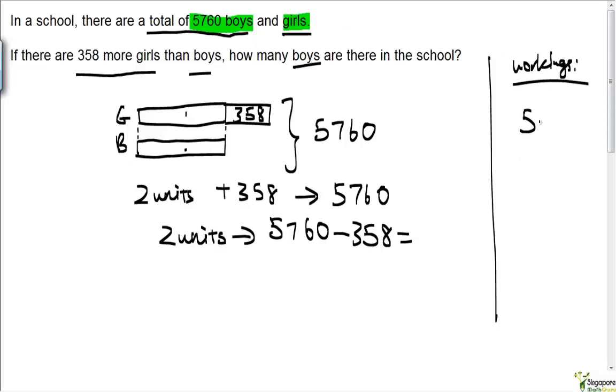5760 minus 358. It cannot be subtracted from zero, so we borrow from the 10th place. We bring one set of 10 here, so there's 10 ones here. 10 minus 8 is 2, 5 minus 5 is 0, 7 minus 3 is 4, 5 minus nothing is just 5.